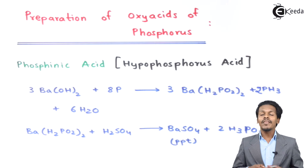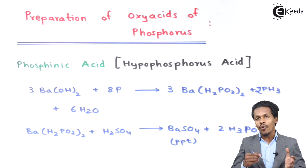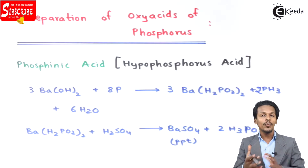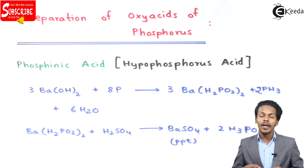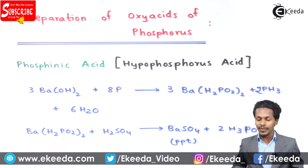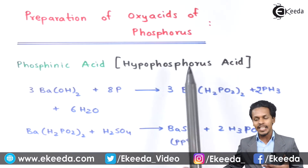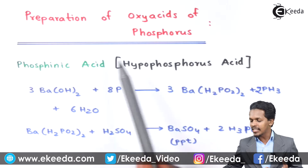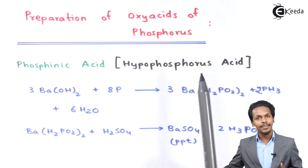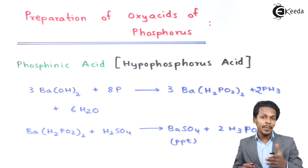In this topic we are going to talk about the Oxy Acids of Phosphorus. We have a few preparations to cover. The starting one is Hypophosphorous Acid, also known as Phosphonic Acid, and let us understand how it has been prepared.